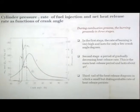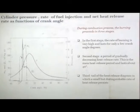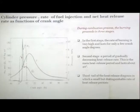During combustion, burning proceeds in three stages. In the first stage, the rate of burning is very high and lasts only a few crank angle degrees, because there is a lot of pre-mixed vaporized fuel available. Second stage: a period of gradually decreasing heat release rate — the main heat release period — lasting up to 40 crank angle degrees depending on how much fuel was injected. If more fuel is injected it will be longer; if less, it will be shorter. Third: a tail of heat release with a small but distinguished rate of heat release.